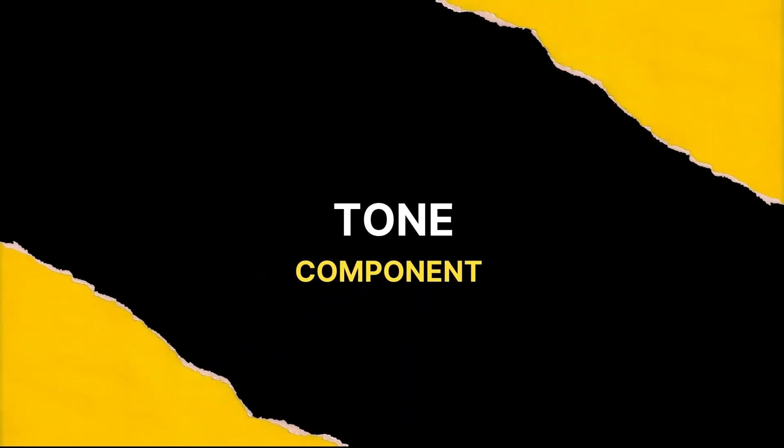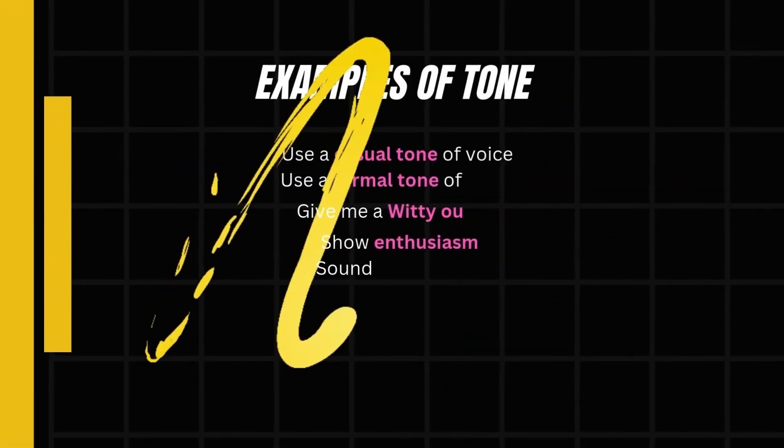Another pro tip: whenever I use ChatGPT to edit any document, I specify that changes should be bolded, making it easy to review revisions at a glance. For the tone component, you can opt for a formal voice, a casual one, a witty response, express enthusiasm, or even adopt a pessimistic outlook. A pro tip: explicitly communicate the feeling you want to achieve. For example, for an enthusiastic tone: 'Hi everyone, I'm super excited about the upcoming project, I can't wait to see all the amazing ideas we'll come up with together.'